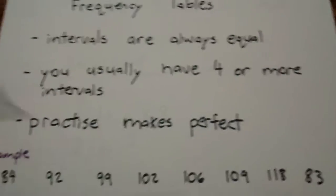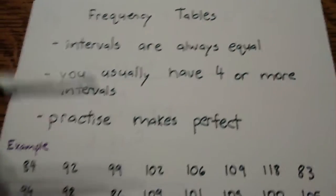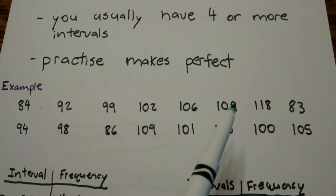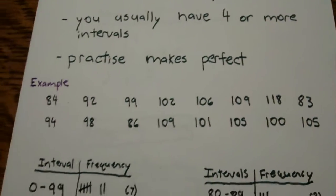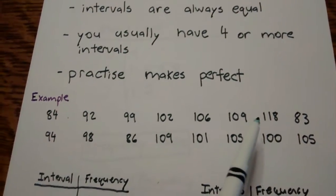It is a skill to look at numbers and be able to organize them and it will take a couple of times of just practicing. So here's an example for you. Let's say these are magazine dollars raised for a fundraiser ranging from about $83 to $118.